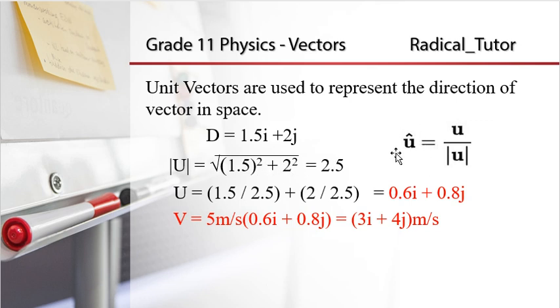We can see that the unit vector u can be given by dividing by the magnitude. The magnitude is the square root of 1.5 squared plus 2 squared, which equals 2.5.